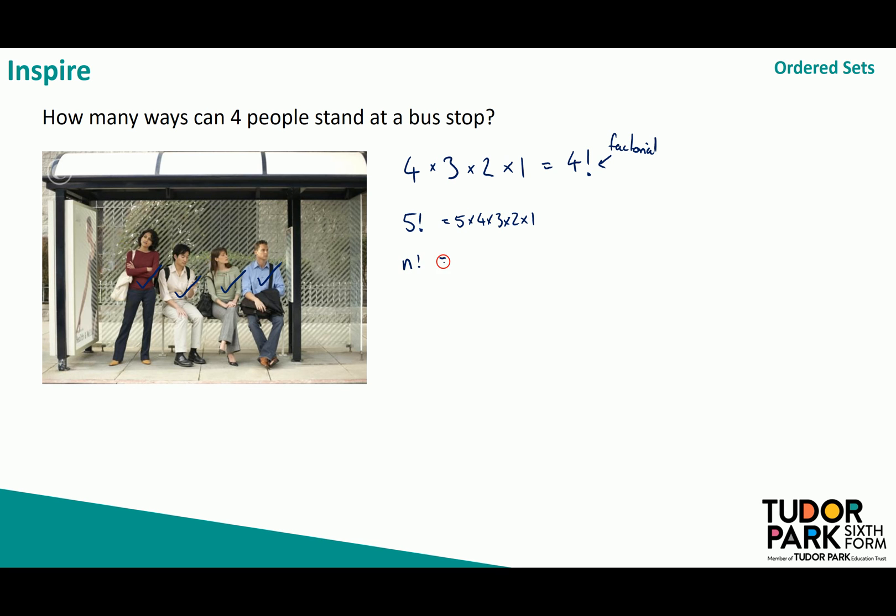N factorial becomes N times its predecessor which is N minus one times its predecessor which is N minus two and so on until we get to times two times one. The last thing I should mention at this point is that zero factorial is one.